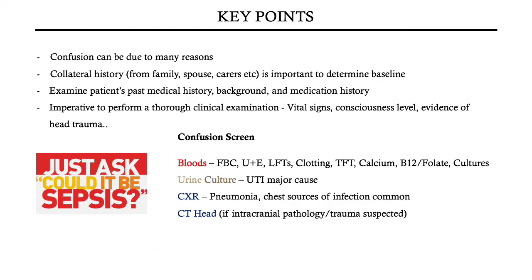In conclusion, confusion can be due to many reasons and can be difficult to assess if the patient is non-cooperative or non-communicative. Collateral history from family and carers will be useful to assess baseline and any changes from baseline. The patient's past medical history, background, and social history are very important and often contain clues to the likeliest causes of confusion. It is imperative to perform a thorough clinical exam — look at vital signs, consciousness level, and any evidence of trauma or fall. Lastly, ask yourself: could this be sepsis? Sepsis is a very common cause of confusion among the elderly and can be very easily overlooked, so perform a confusion screen early.